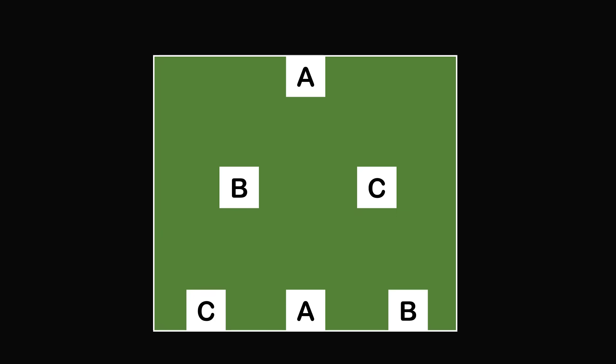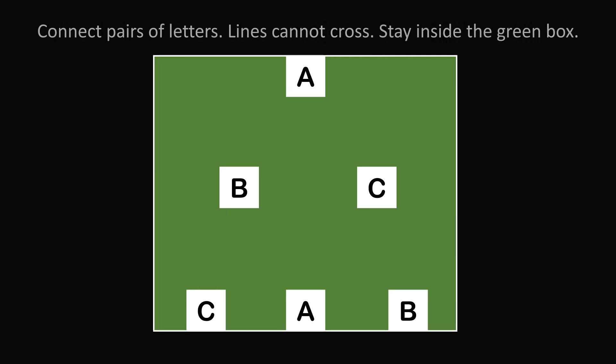Puzzle 1. There's a rectangular field with two boxes labeled A, two boxes labeled B, and two boxes labeled C. Your challenge is to connect pairs of letters with lines. The lines cannot cross each other, and you must stay inside the green box.